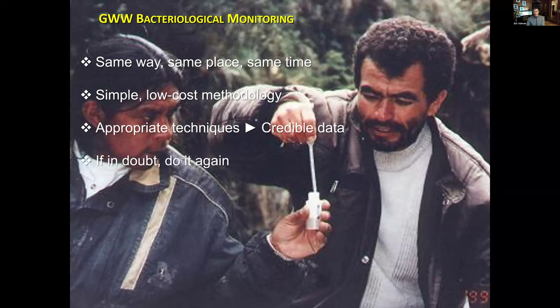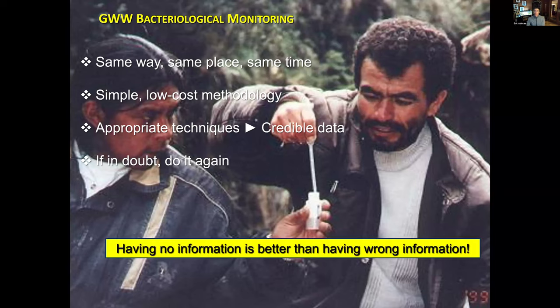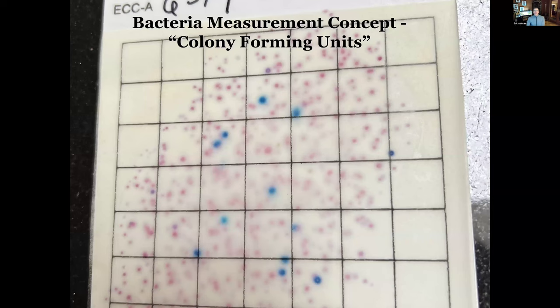When in doubt, do it again. If you think you've made a mistake, don't assume you might have done it right — just repeat your test versus recording incorrect data. Now let's talk about a concept in bacteria measurement called colony forming units, also known as CFUs. A colony forming unit is a clump of bacteria that are viable enough to form a colony.